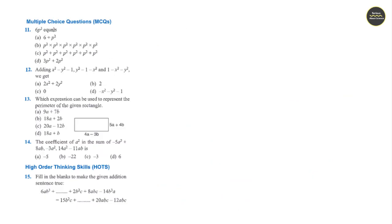Multiple Choice Questions. Question 11: It is p square and in option c we can see it is the sum of p square six times. So the answer for question 11 is option c.